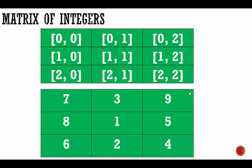Here's our matrix of integers. If I want to look at 1, I'm looking in row 2 represented by index 1, column 2 represented by index 1. Here we have our list of coordinates, and they correspond to these numbers. Now let's switch over to Python and actually build and talk about how we build this 2D list.